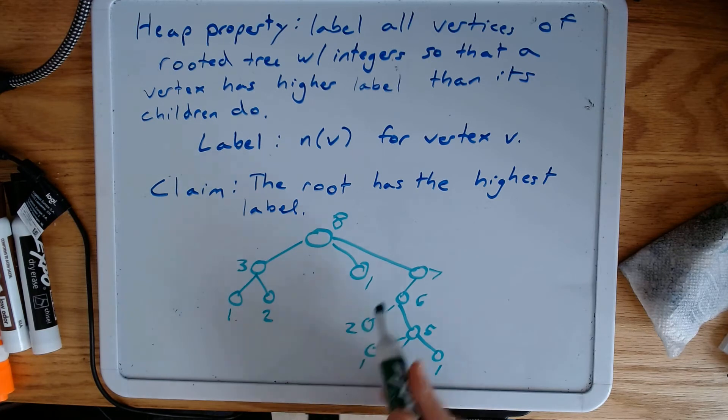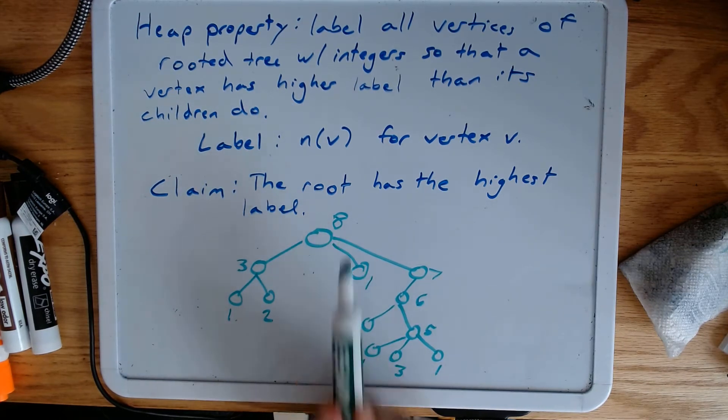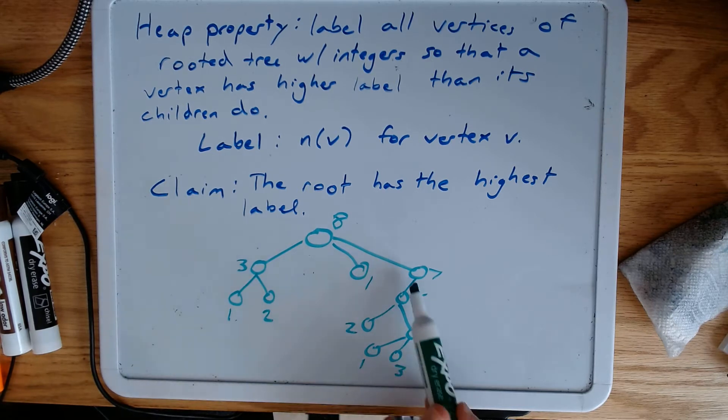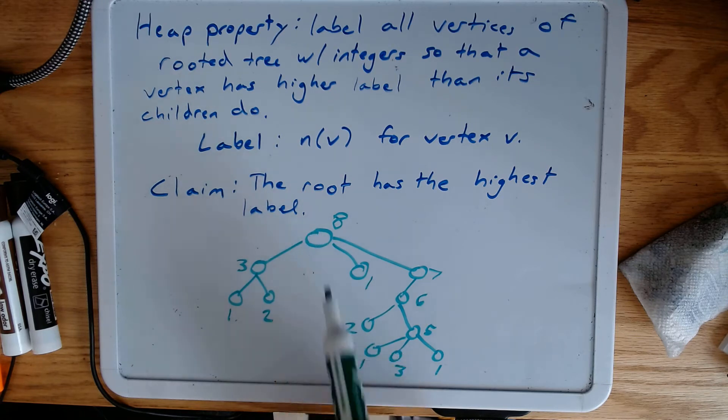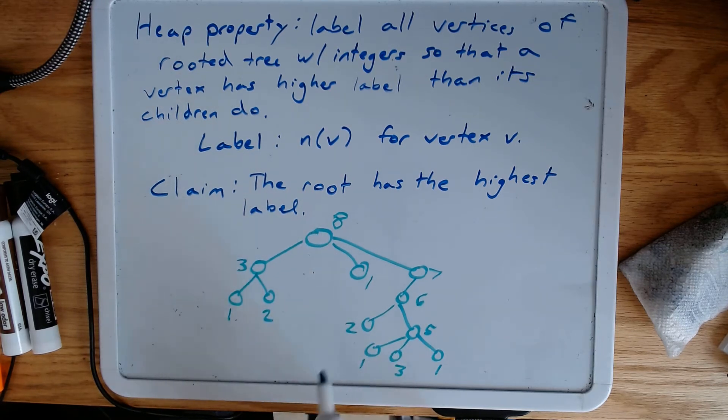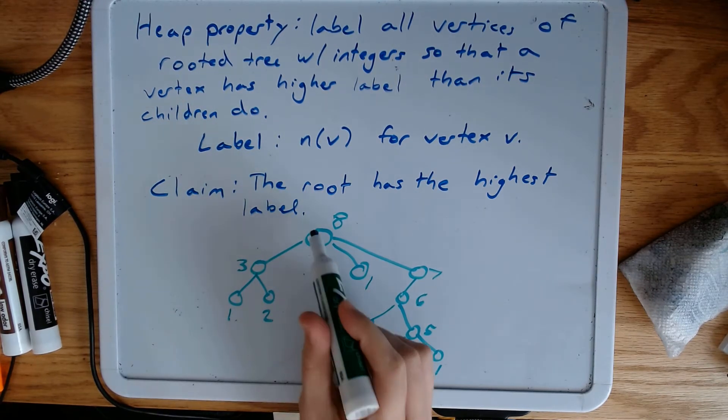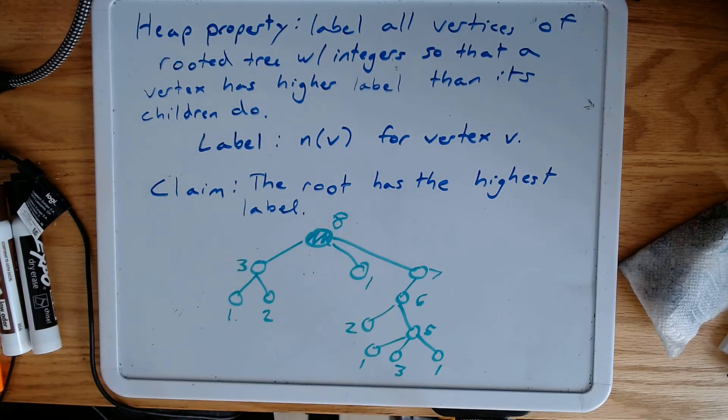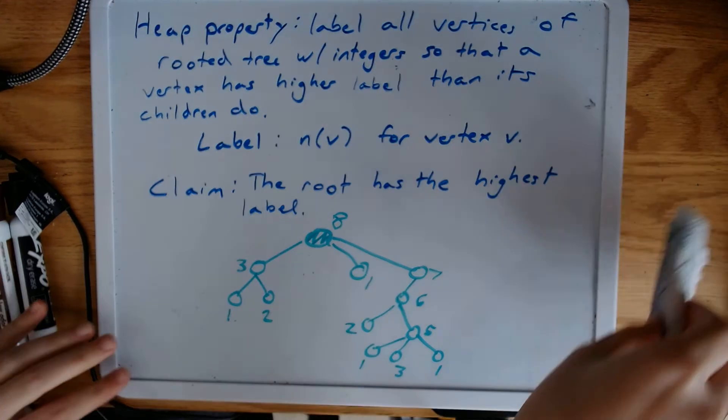In this tree, as we worked through that, we got the highest label at our root. We can sort of see why. We keep getting a higher label as we go up from the children. But we want to prove formally that this label at the root is the highest one. So let's do that with structural induction.